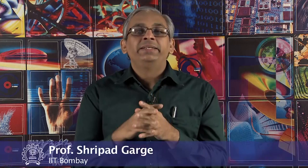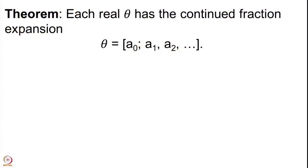Welcome back. In the last lecture we proved that every real number theta has the continued fraction expansion which we had constructed in a natural way. This is the result we proved: each real theta has the continued fraction expansion a0, a1, a2, where these were constructed in the last lecture, but let me just remind you.